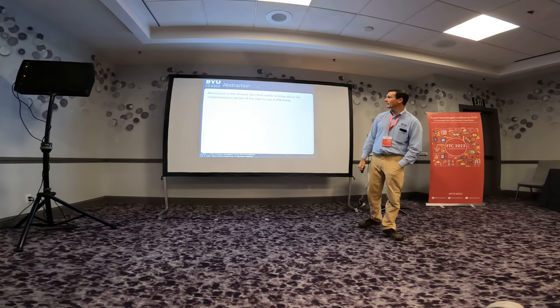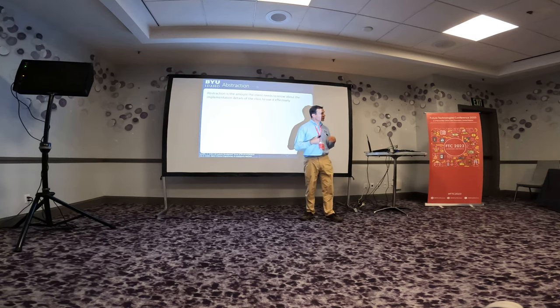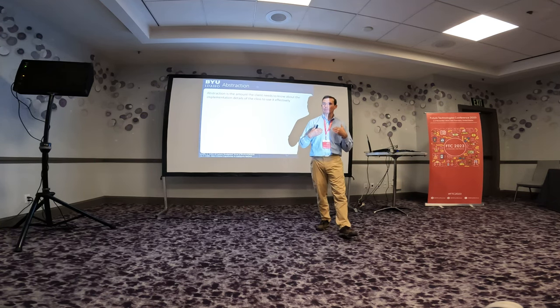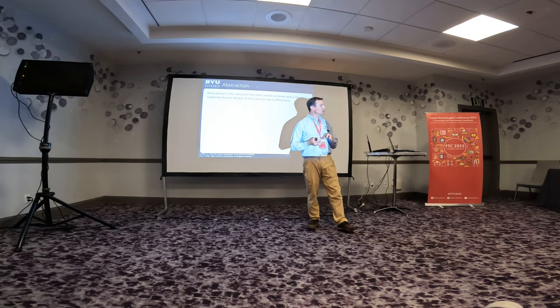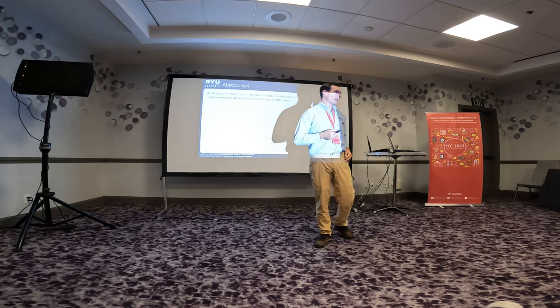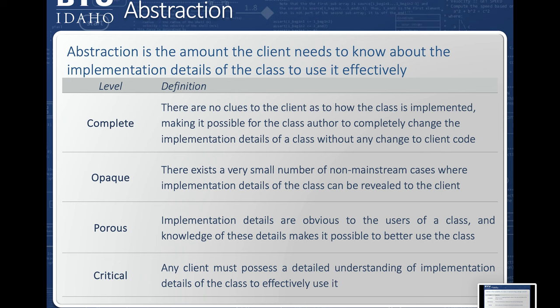The last metric is abstraction — the amount the client needs to know about implementation details to use it effectively. In other words, are we shielding the client from having to know about implementation details? Are we giving the programmer the freedom to innovate on the implementation without impacting the client's functionality? Complete abstraction means there is no way the client will ever know about my implementation details or private methods. Critical — the worst case — means the client has to know every single detail in order to use the class effectively.